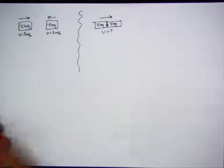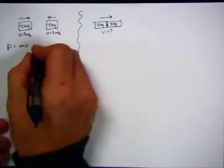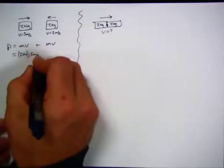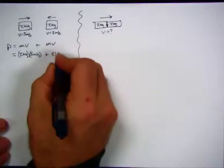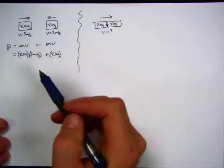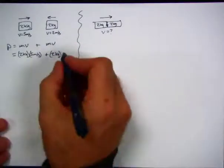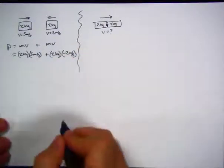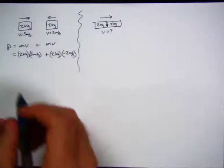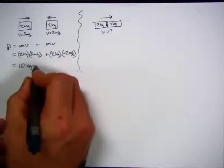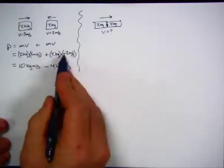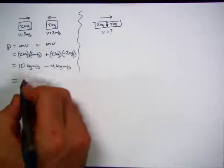Standard procedure: momentum is mass times velocity plus mass times velocity. We have two kilograms times five meters per second for the first car, plus two kilograms times the second car's velocity. The second car was moving to the left — the opposite direction — so we say minus two meters per second. Five times two gives 10 kilogram meters per second, and two times two gives minus four kilogram meters per second.